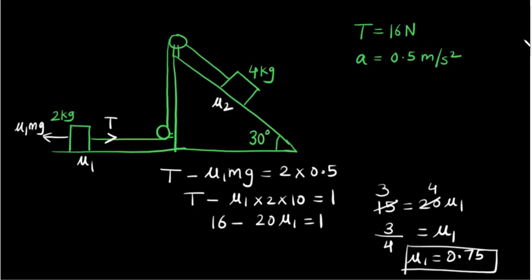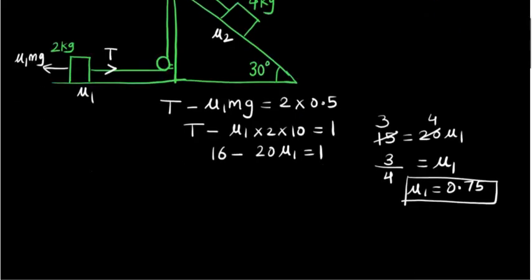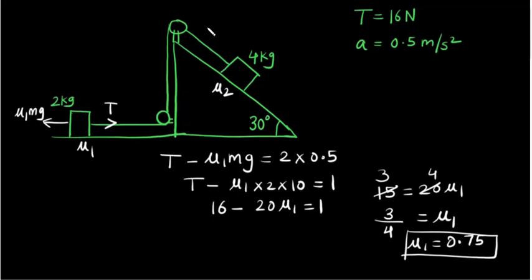Let's find out mu2. So I will draw the free body diagram here itself so that you will understand. Let me draw it here. The tension T is in this direction. There will be mg sin theta, 4g sin 30.